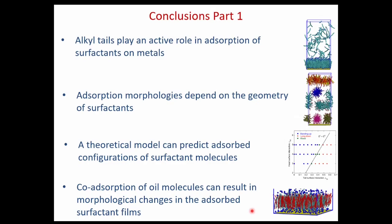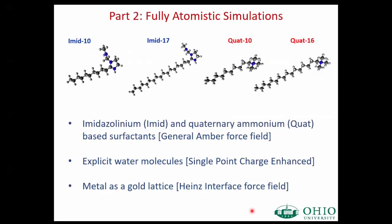To conclude the first part: alkyl tails play an active role in adsorption of surfactants on metal surfaces. Adsorption morphologies depend on the geometry of the surfactants. We have a theoretical model that can predict adsorbed configurations, and co-adsorption of oil molecules can result in morphological changes in adsorbed surfactant films, making them better for corrosion inhibition. That was the work done using a coarse-grained model in which we simplified the chemistry of the molecules.